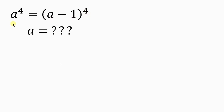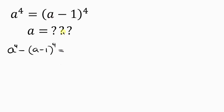Our first step will be to move what we have on the right to the left-hand side. So we have A to the fourth minus — it is minus because when I move this to the left it becomes negative — A minus 1 to the fourth equal to zero, since nothing is left on the right.